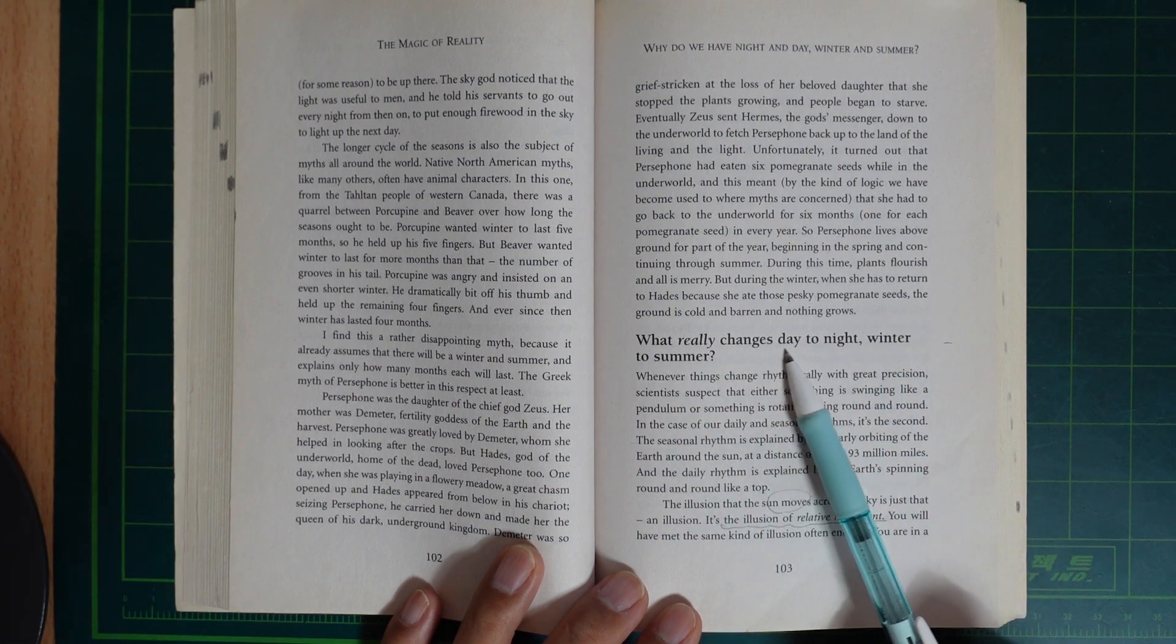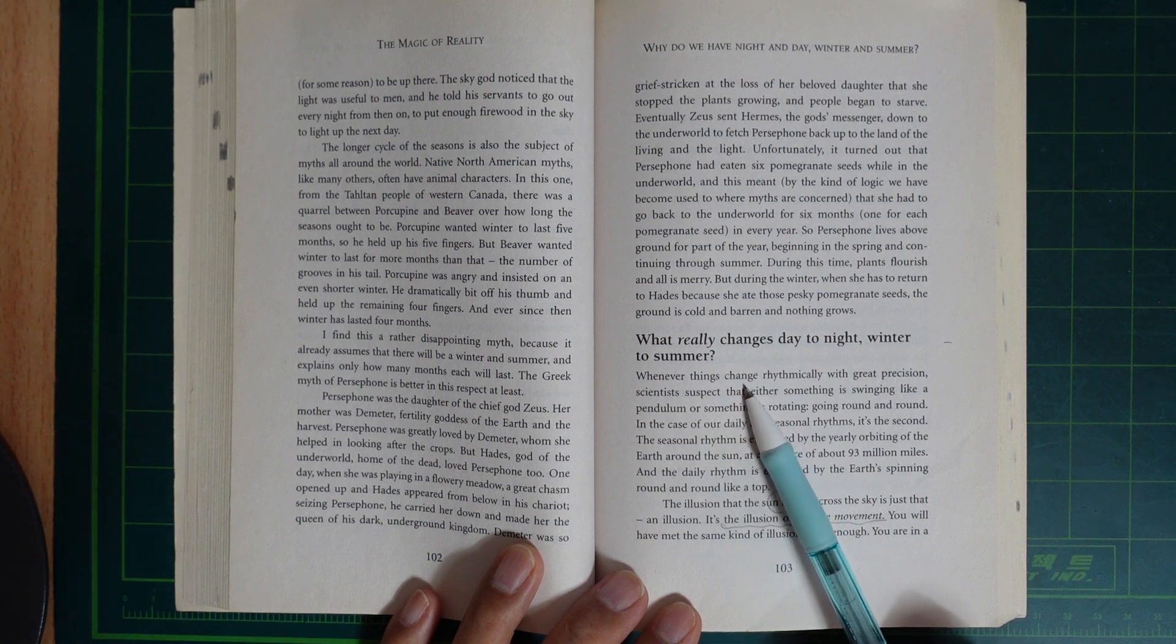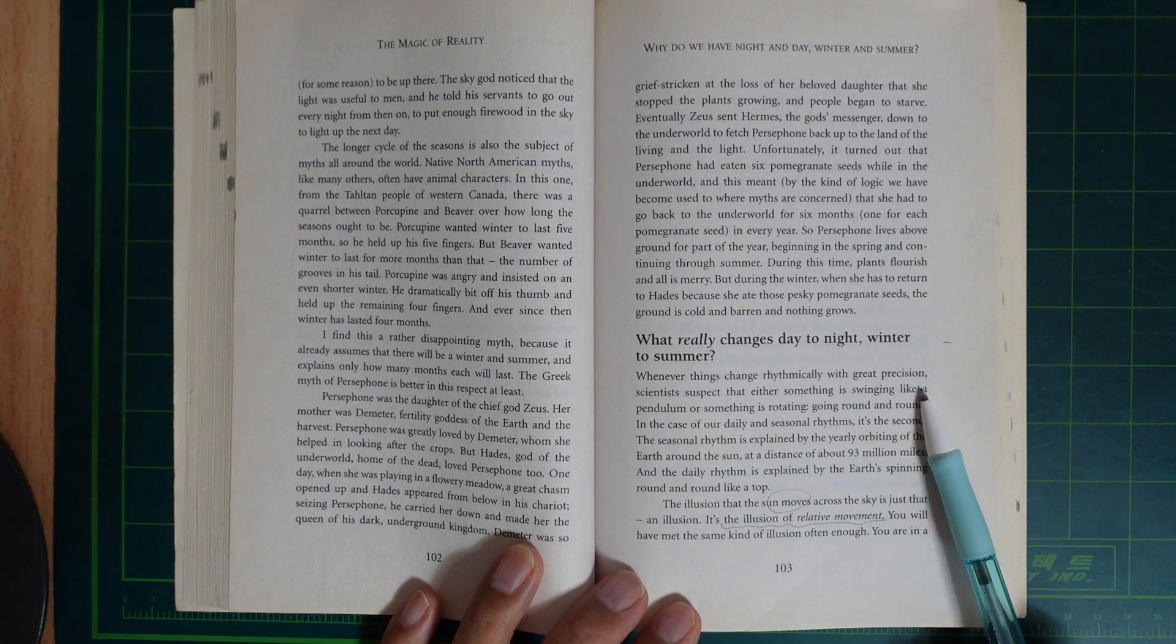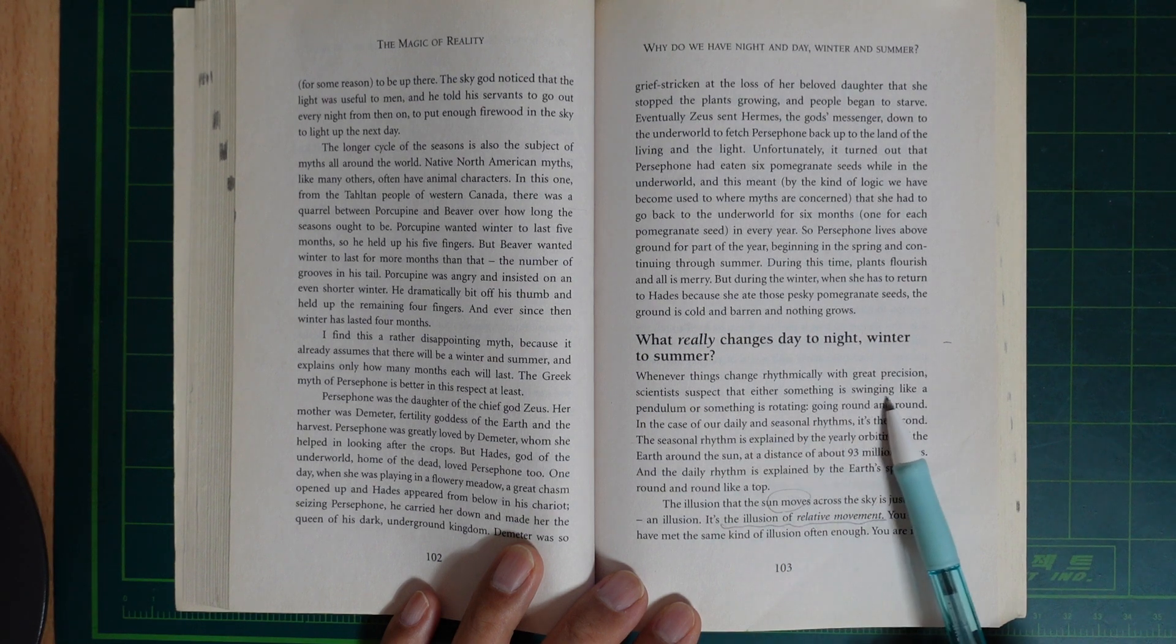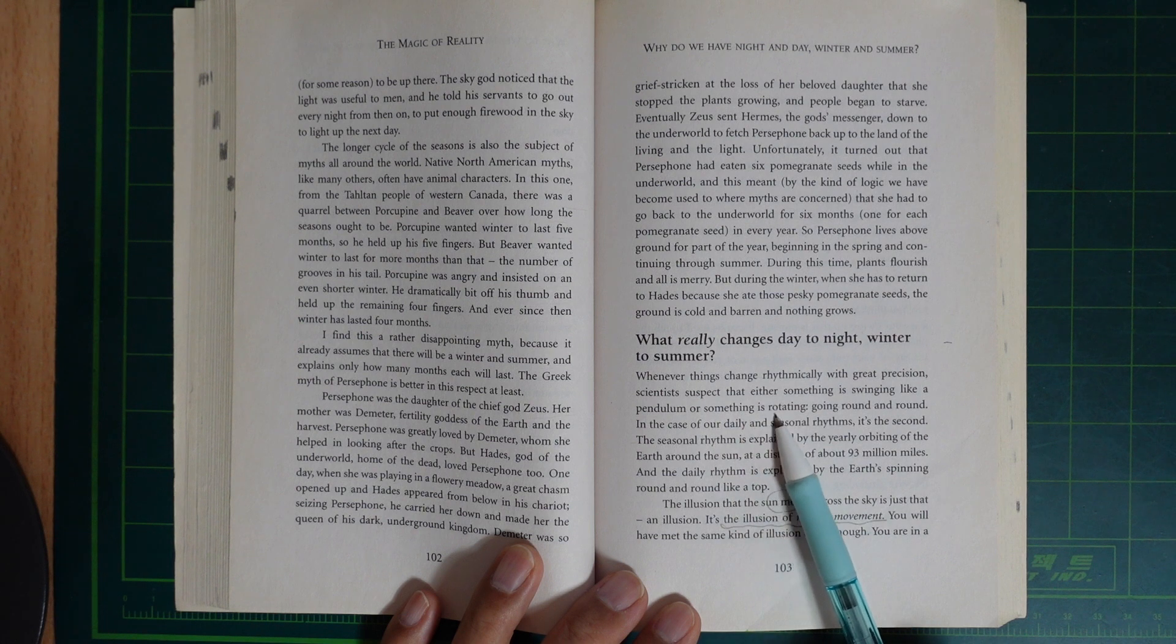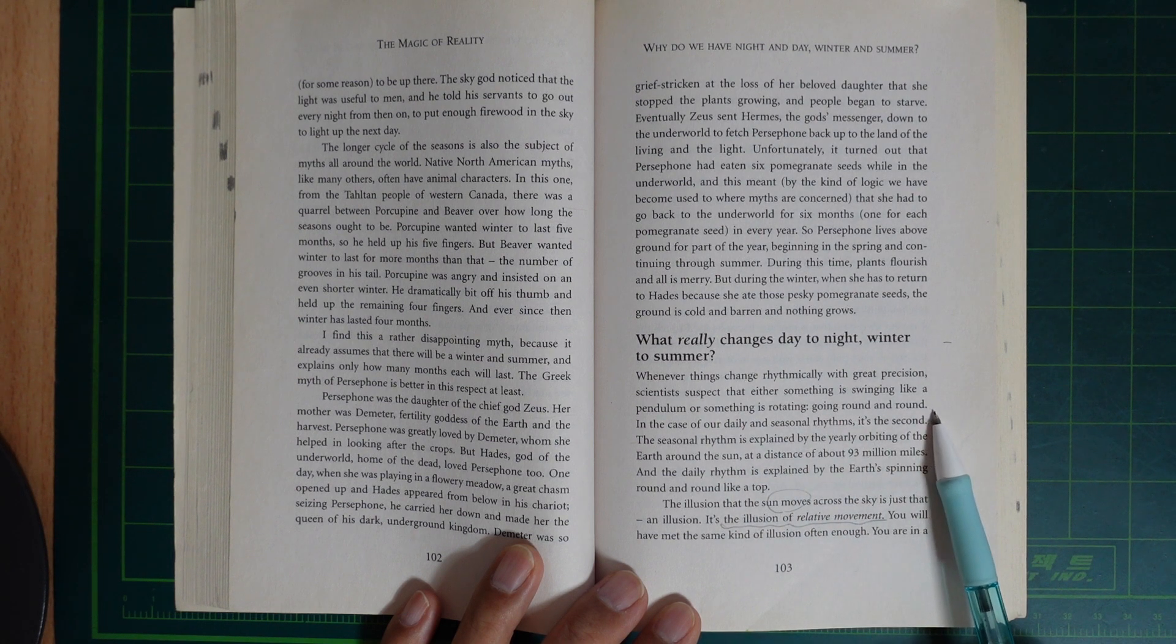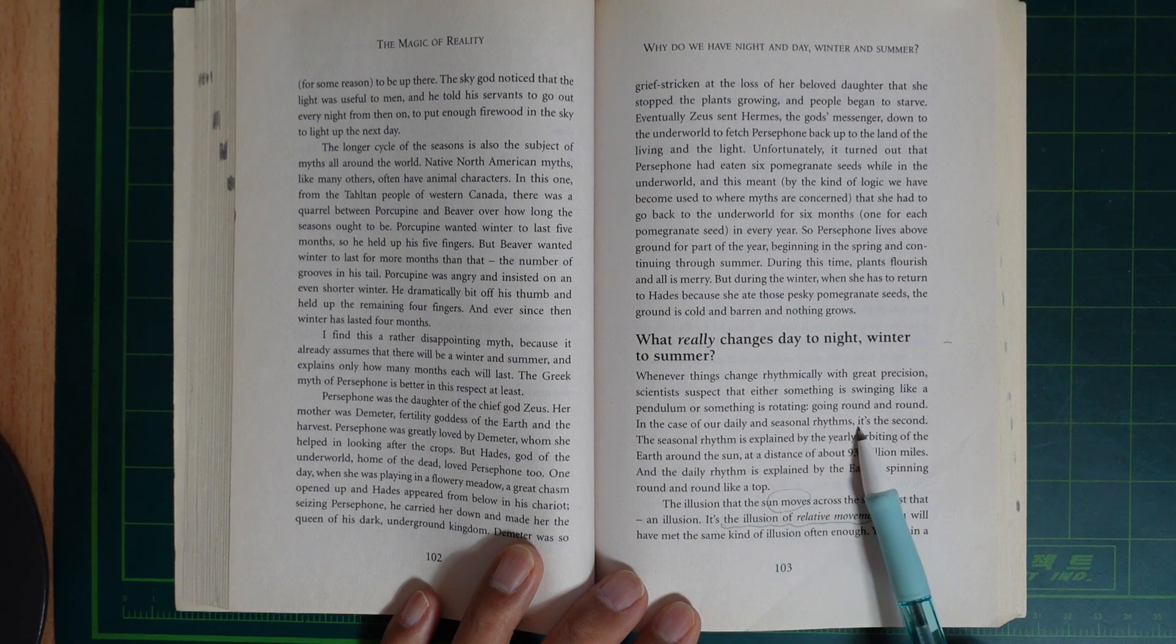What really changes day to night, winter to summer? Whenever things change rhythmically with great precision, scientists suspect that either something is swinging like a pendulum or something is rotating, going round and round. In the case of our daily and seasonal rhythms it's the second.